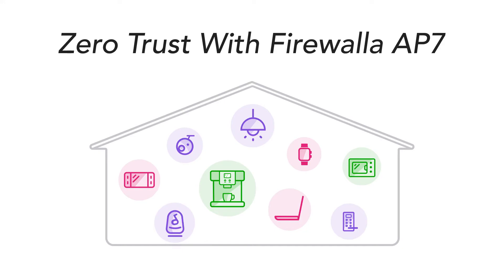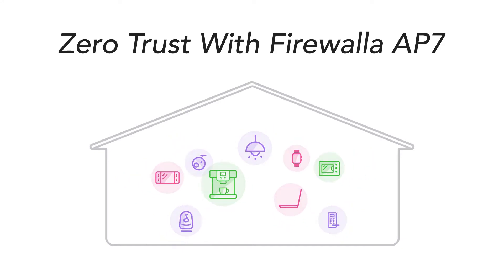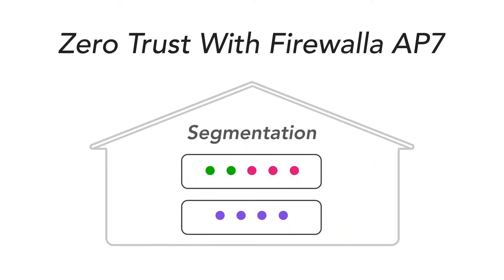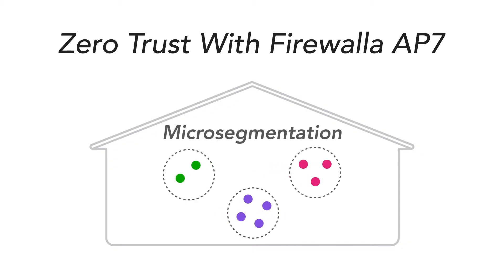One key principle of Zero Trust is segmentation, and more specifically, micro-segmentation. With the Firewallet AP7, we've introduced advanced methods of micro-segmentation to enhance your network security.